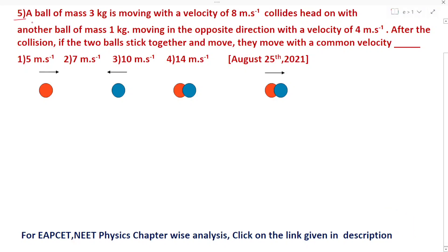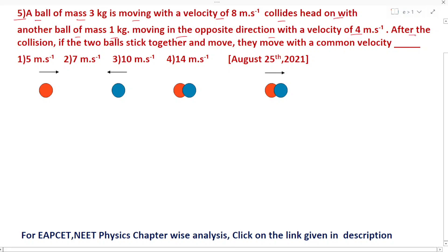What is the fifth question? A ball of mass 3 kg is moving with a velocity of 8 meters per second. It collides head-on with another ball of mass 1 kg moving in the opposite direction with a velocity of 4 meters per second. After the collision, the two balls stick together and move with a common velocity.